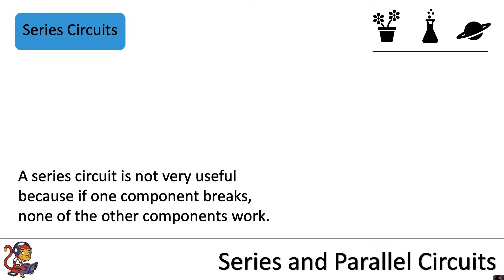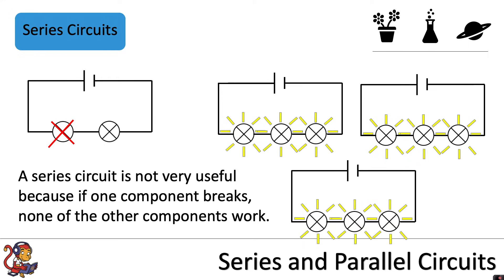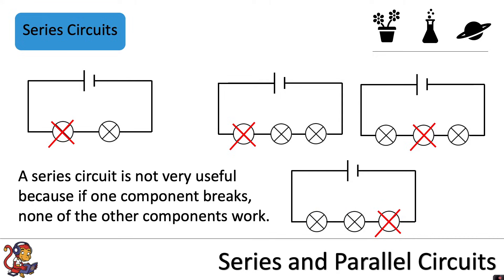However, a series circuit is not very useful because if one component breaks, none of the other components work. Here we've got a series circuit with two lamps shining brightly. If one were to break, that breaks the whole circuit and none of the lamps would light up. It doesn't matter which component breaks — it could be the first, second, or third lamp. Wherever it is, the circuit is broken and all components will not work.